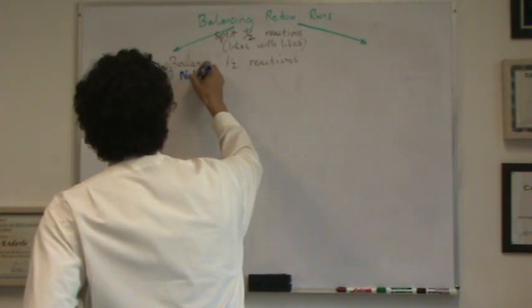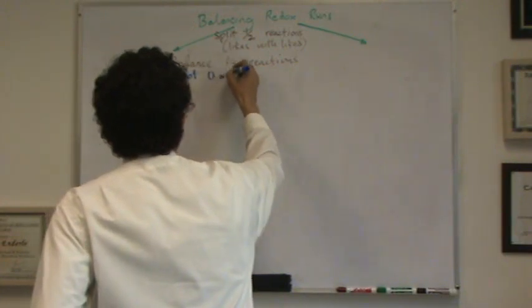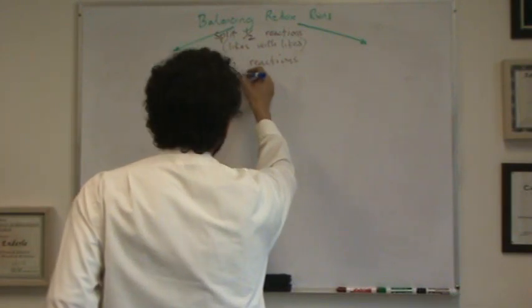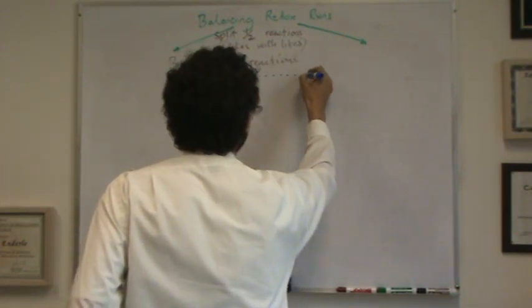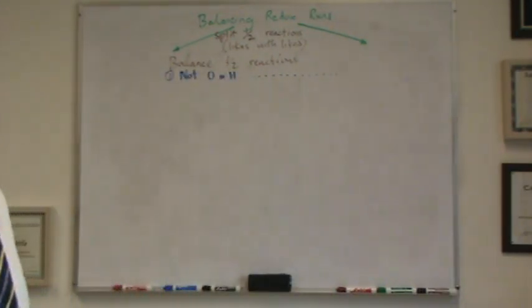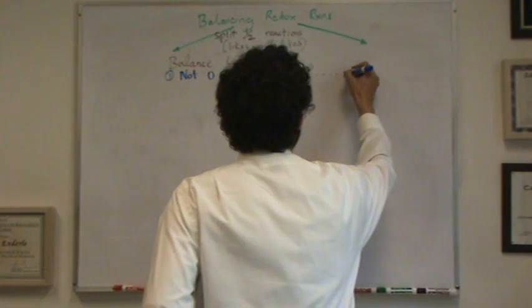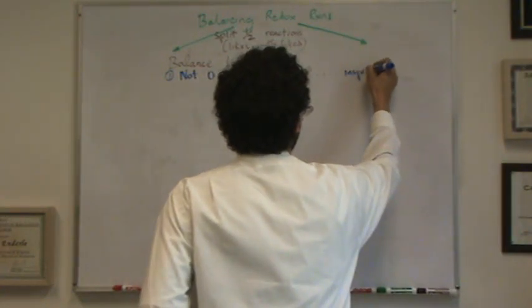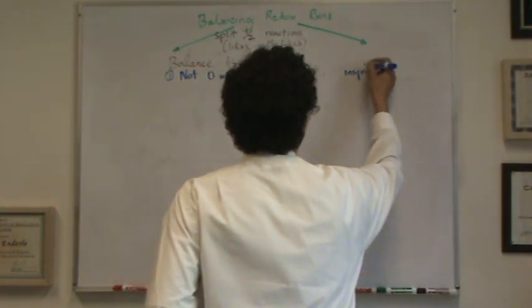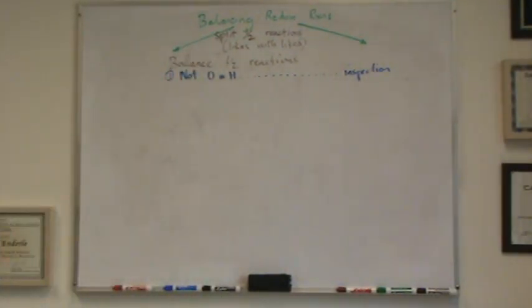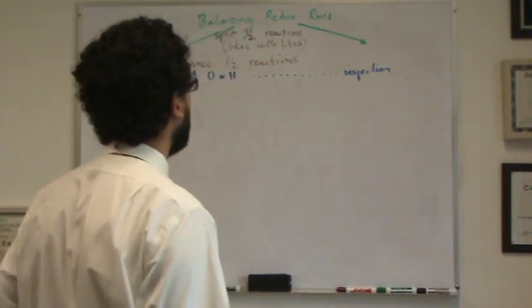Step one: balance whatever you find that is not oxygen or hydrogen. So you look through your reaction, you find there's some things that are not oxygen or hydrogen, you balance those by inspection. That's the typical way that we've done before. For example, if there's two iodines on one side and one on the other, you make it so they have equal numbers.